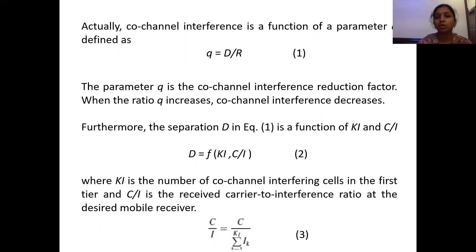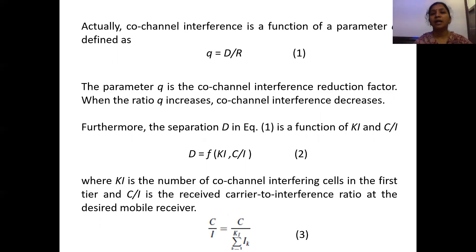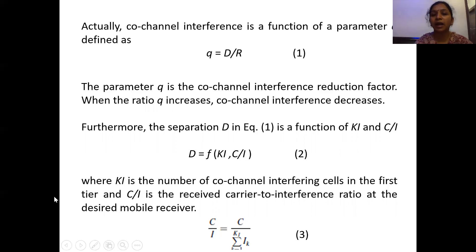The parameter q is the co-channel interference reduction factor. When the ratio q increases, since q equals d divided by r, co-channel interference also decreases because the distance between the two co-channel cells increases, and when this distance increases, co-channel interference automatically decreases. Furthermore, the separation d is a function of ki and C/I, where ki is the number of co-channel interference cells in the first tier, and C/I is the received carrier-to-interference ratio on the desired mobile receiver.